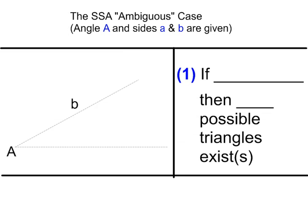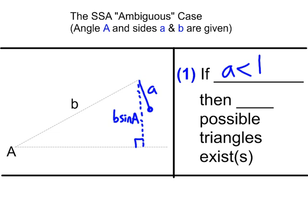Let's fill in the first case. Recall from GeoGebra: little a was too small to reach the ground, and the ground distance was b · sin(A). So if little a is less than b · sin(A), then zero possible triangles exist. All three quantities — a, b, and A — are given, so you can always make this comparison on a calculator.